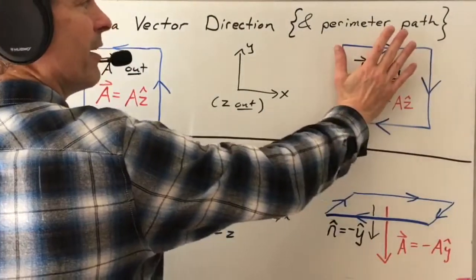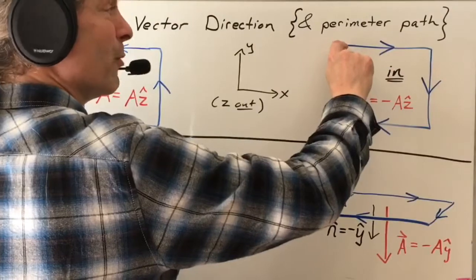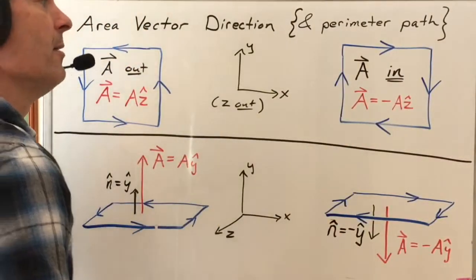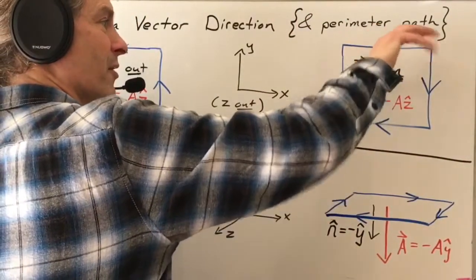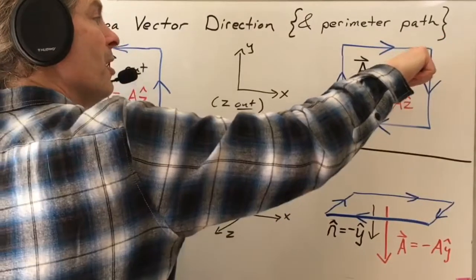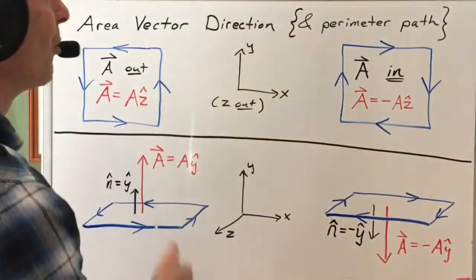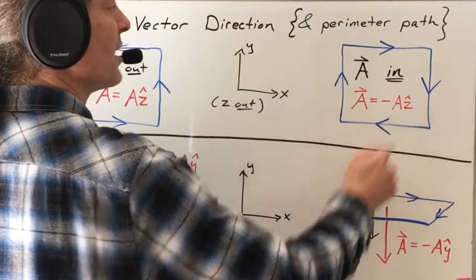Same physical area, but now let me imagine going around the path the other way. So now I want to take this as my positive path around the area. So take my right hand, curl my fingers in the direction of the path around the perimeter. My thumb will point in the direction of the area vector. My area vector is now into the board, or in terms of my coordinate system, my area vector is in the negative Z hat direction.